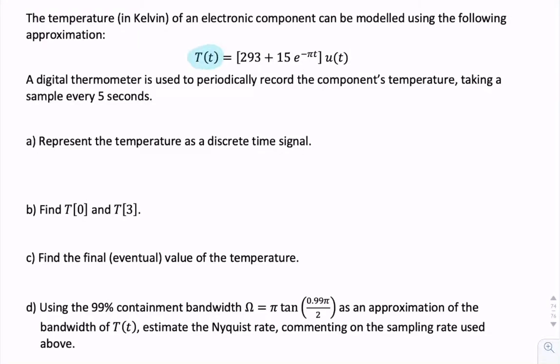In this question, we're given a continuous function of time, and we're asked to sample that and turn it into a discrete time signal. So this is continuous, and what we want is discrete.